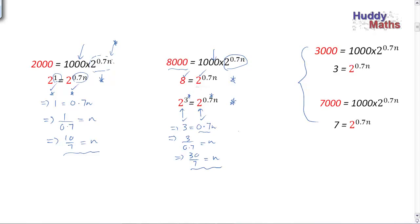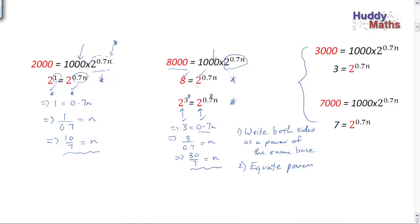What we've done is rearrange and try to write both sides as a power of the same base. That's a good tool. Then we equated the powers — logical, because both sides contain an unknown, and if expressed as powers of the same base, those powers must be equal. Equate the powers, then solve the new power equation. These are exponential equations we can actually solve with this logical process.